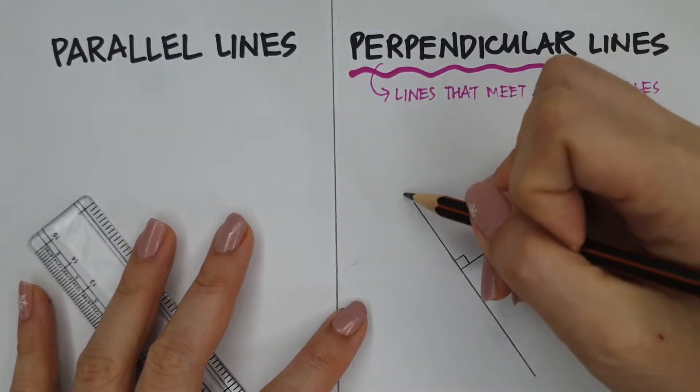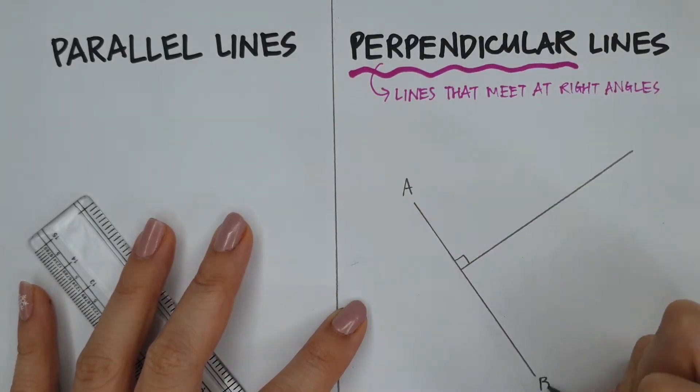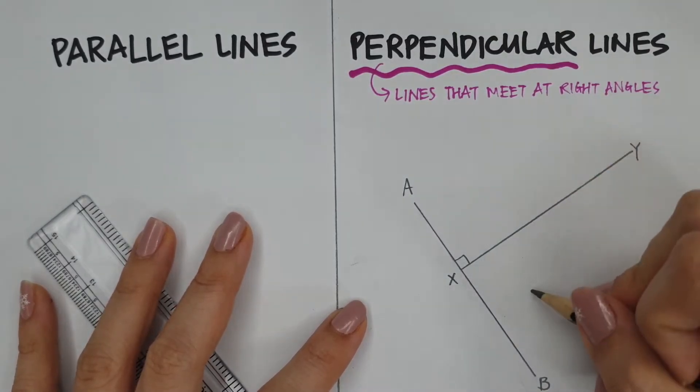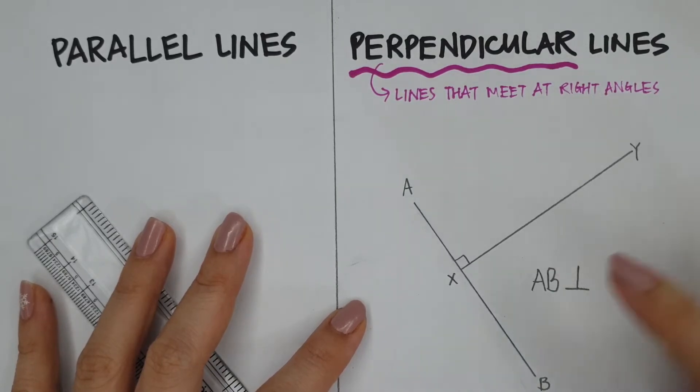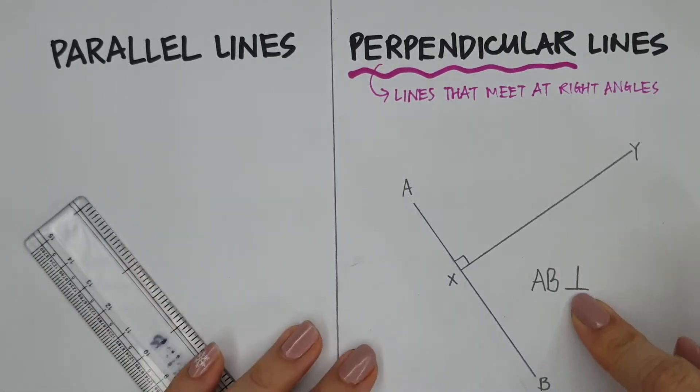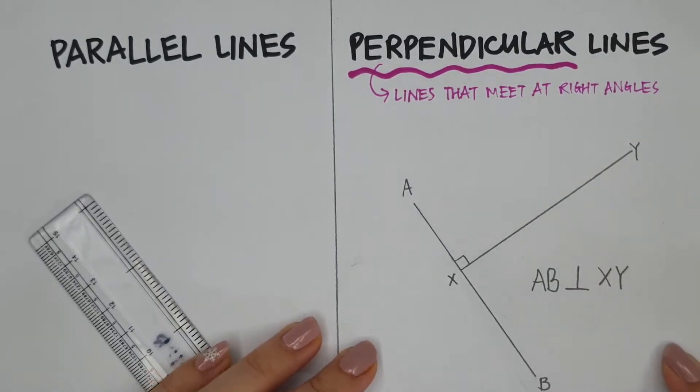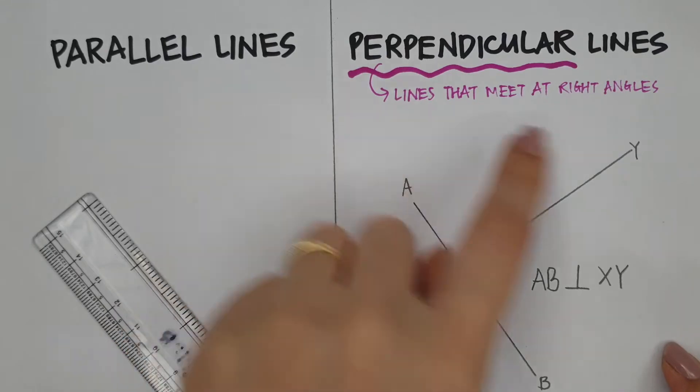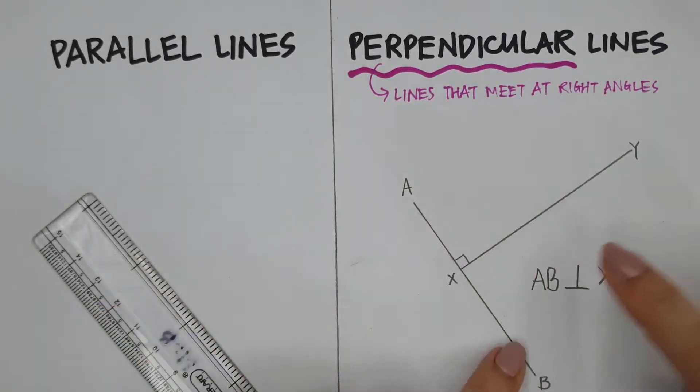Now, let me name the lines. If this line is AB and this line is XY, how do I write it out? I'm going to write AB, and look at the symbol for is perpendicular to, the symbol looks like this, is perpendicular to XY. So, here we have perpendicular lines, lines that meet, these two lines meet at this point which is a right angle.